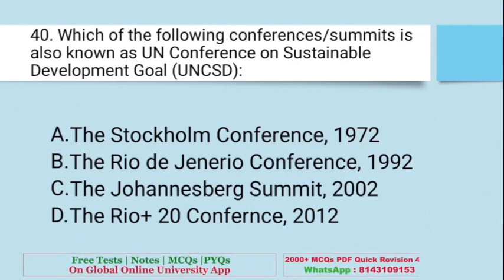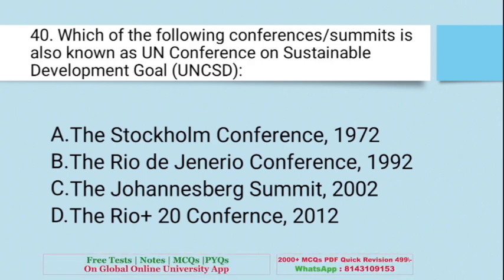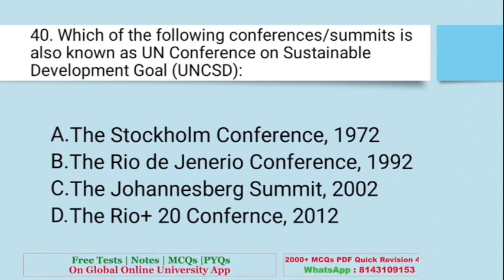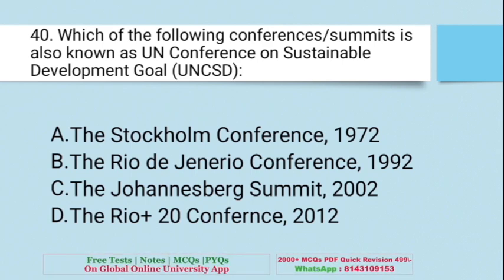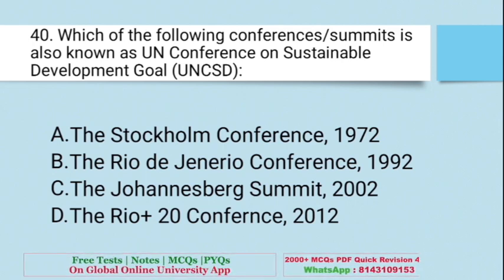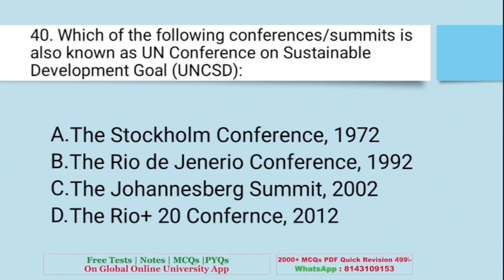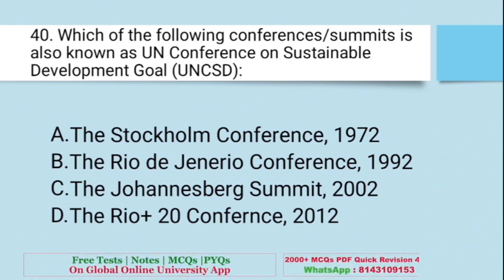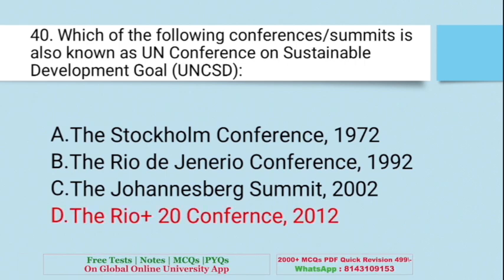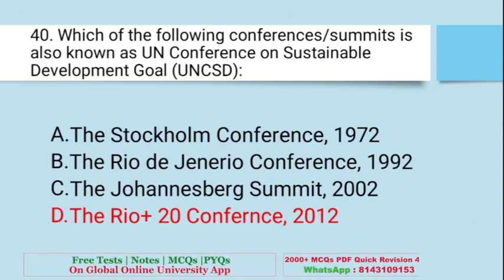Question: Which of the following conferences or summits is also known as the UN Conference on Sustainable Development (UNCSD)? A. Stockholm Conference 1972, B. Rio de Janeiro Conference 1992, C. Johannesburg Summit 2002, D. Rio+20 Conference 2012. The right answer is D — the Rio+20 Conference 2012 is also known as UNCSD.